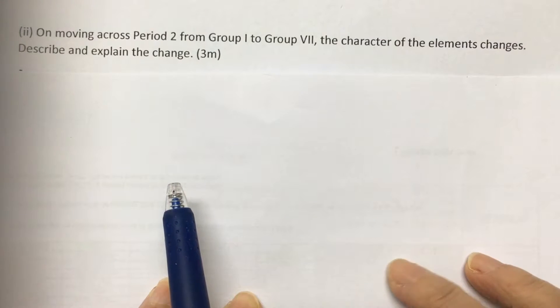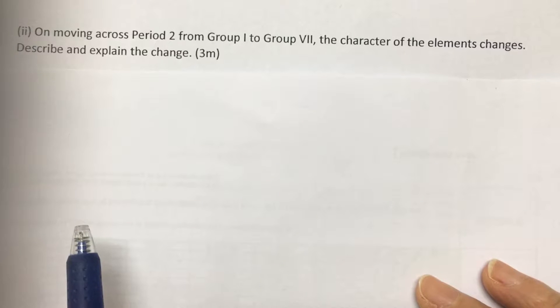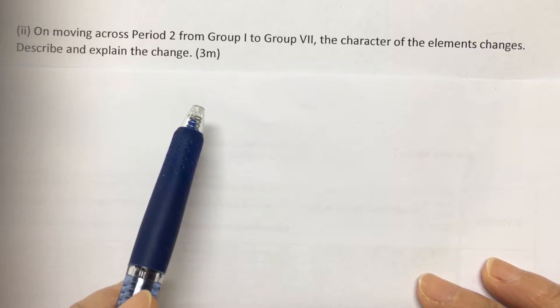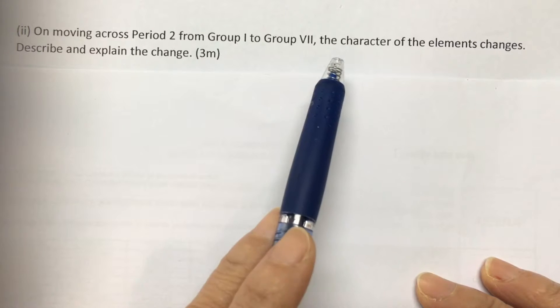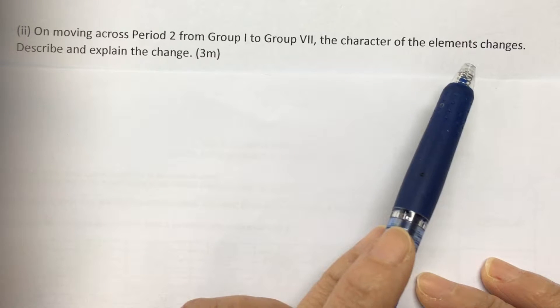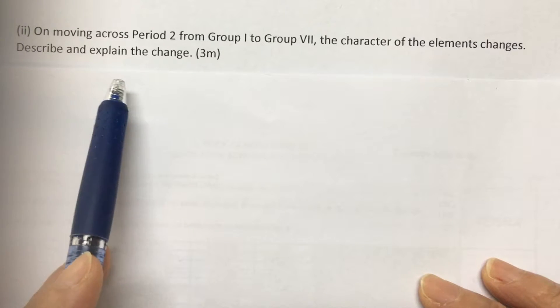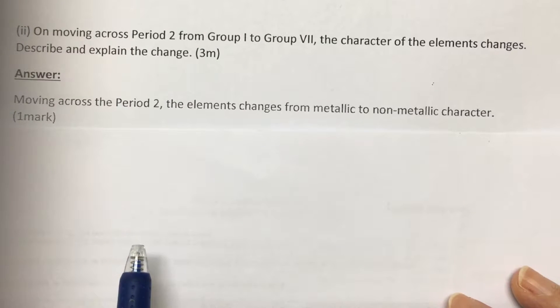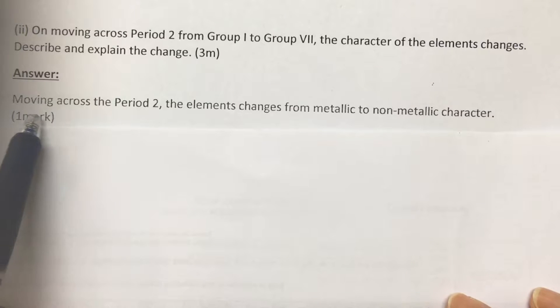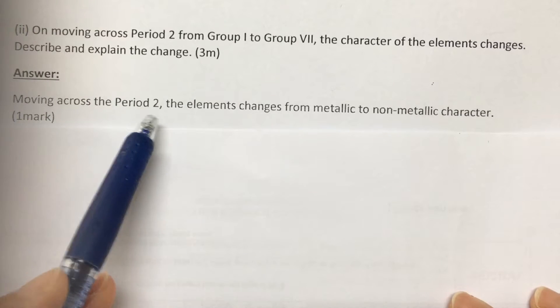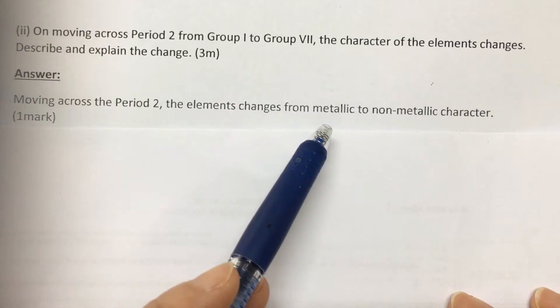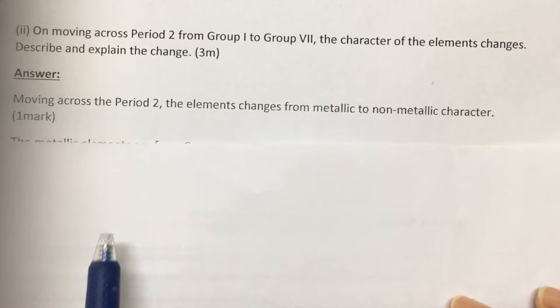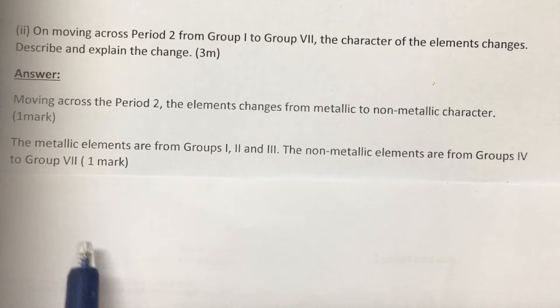Next, A-II question. On moving across period 2 from group 1 to group 7, the character of the elements changes. Describe and explain the change. We know that the answer to this: moving across the period 2, the elements change from metallic to non-metallic in character. And the next mark, we describe the group.